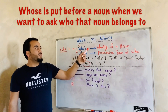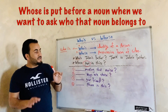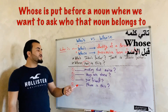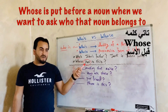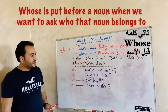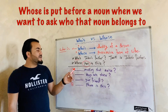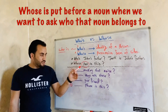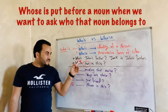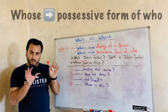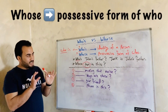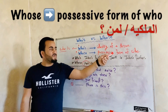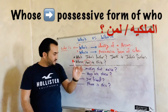Whose with S-E at the end is placed before a noun when we want to ask who that noun belongs to. This is the possessive form of who.